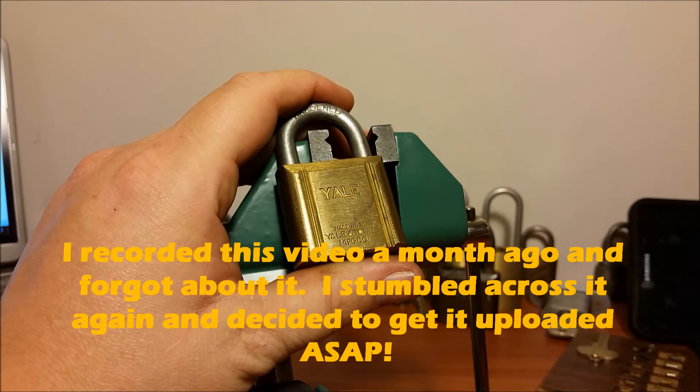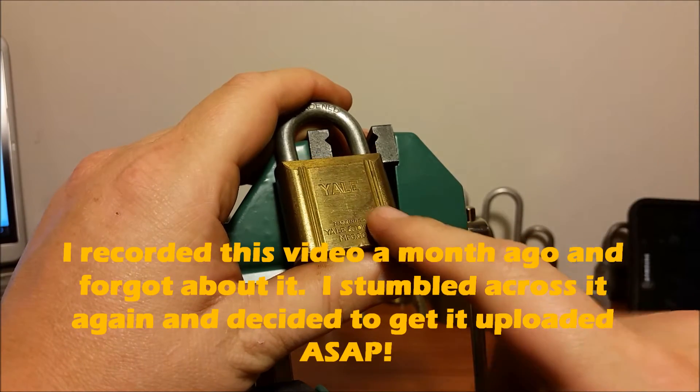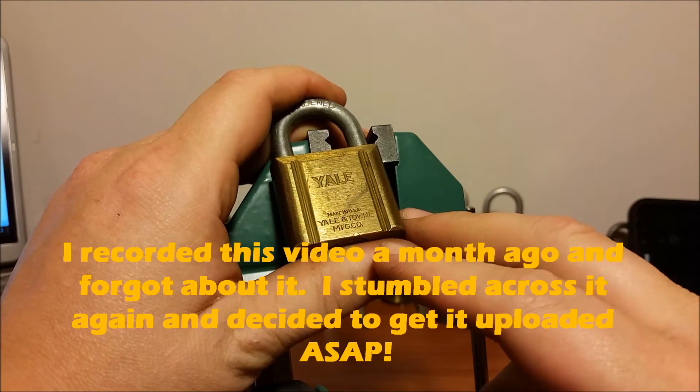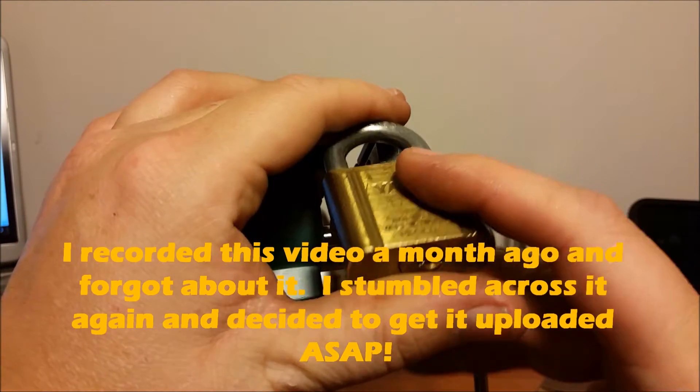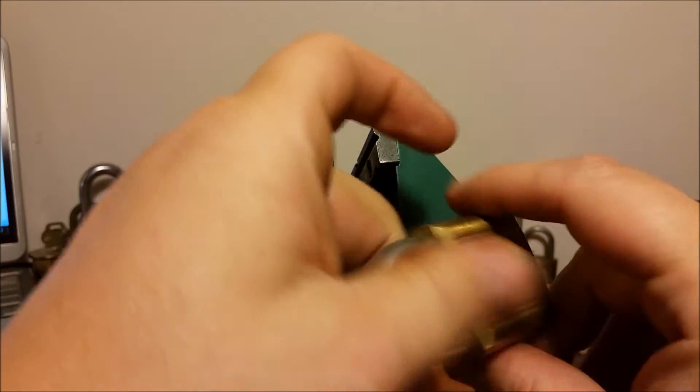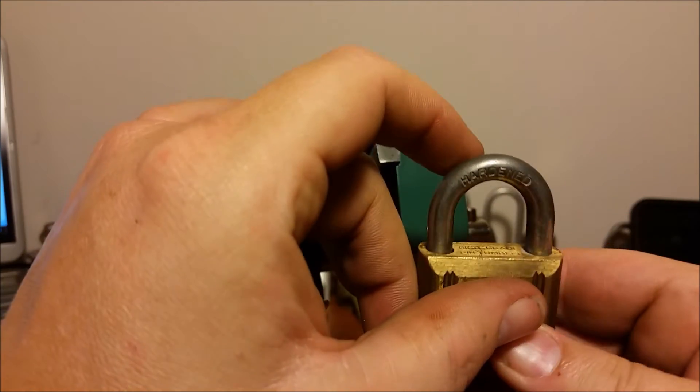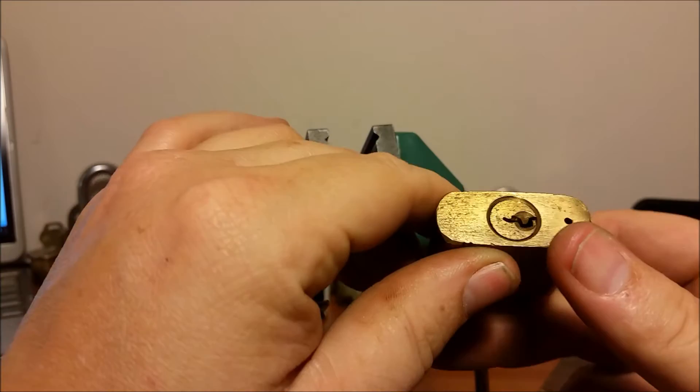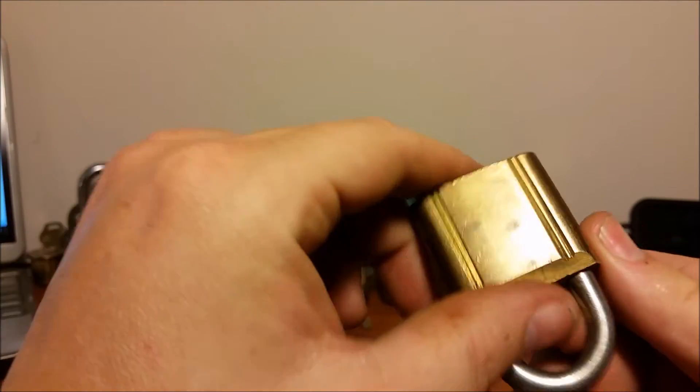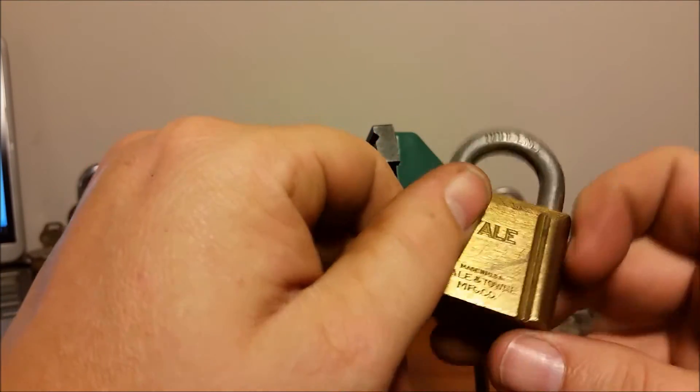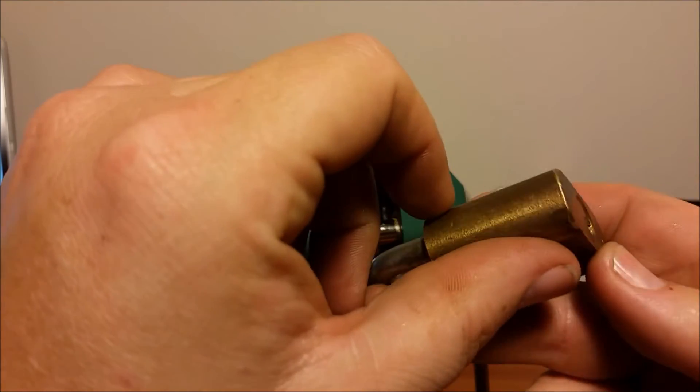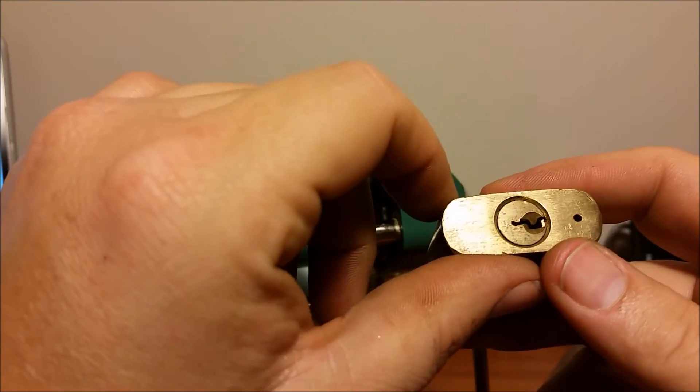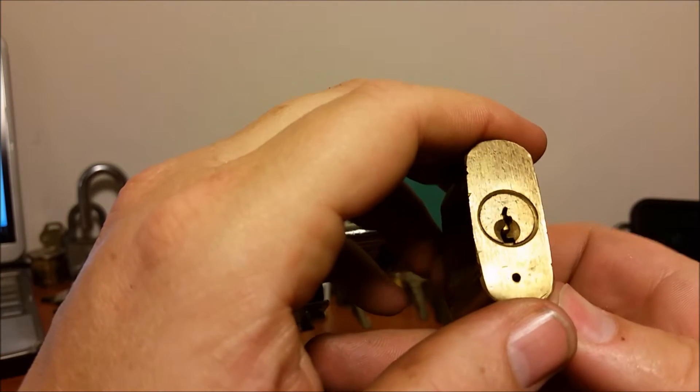Hey everyone, just wanted to do a quick lock picking video with y'all. This time we're doing this small Yale padlock. I don't know anything about it other than the fact that it says high grade pin tumbler made in USA. There's no codes on the bottom or anything, so probably the only way I can ever get a key made for this one is to impression one, but I'm not sure which keyway that is.